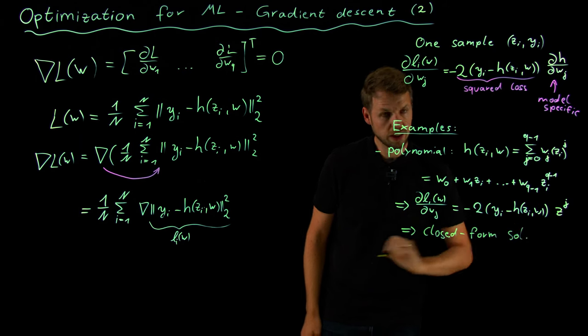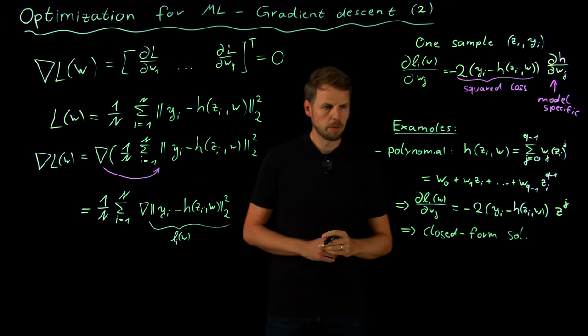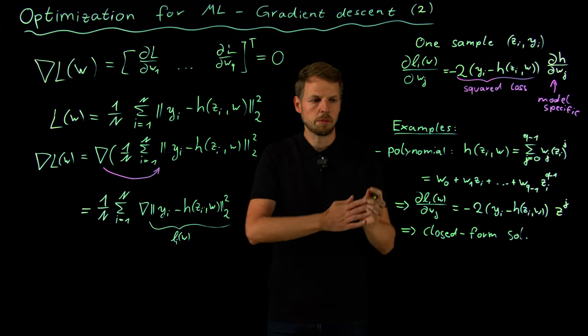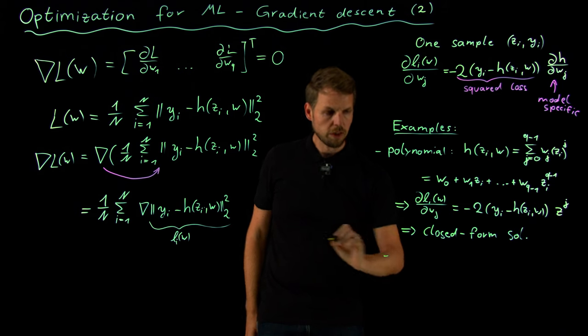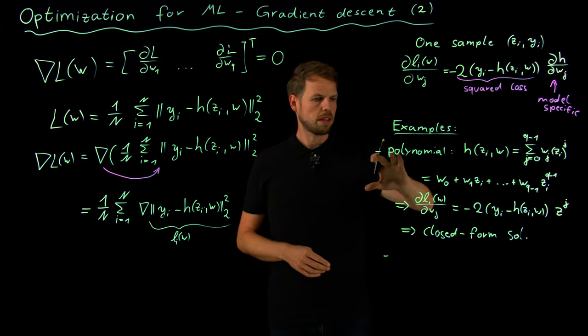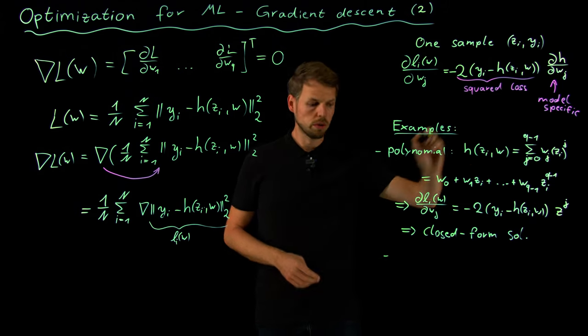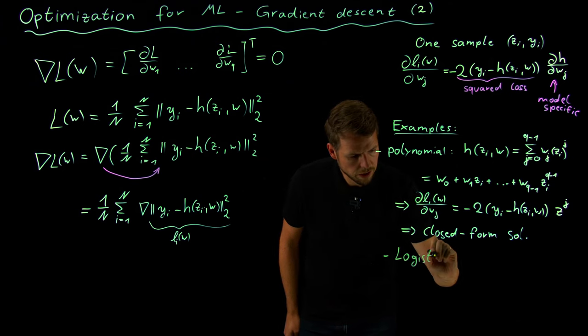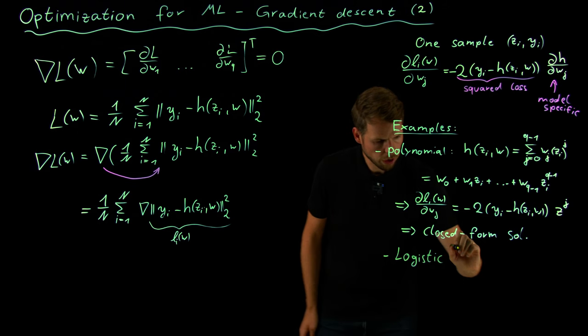And we will see this in the next video where I also have a programming example. This is covered by linear regression, but what you can obviously also have is a model that is no longer linear in w. For instance, consider the popular logistic regression problem.